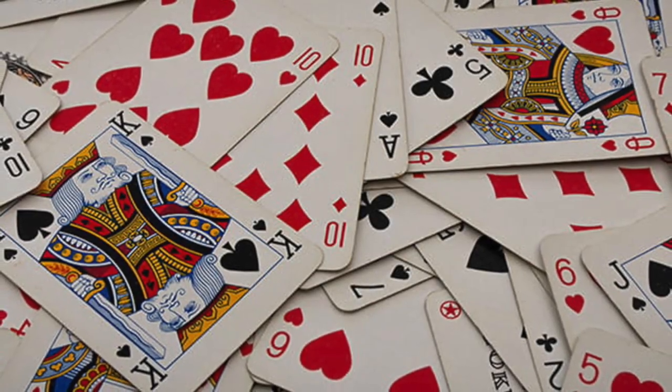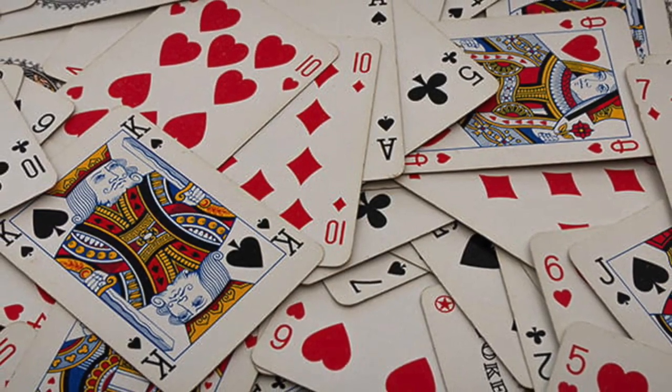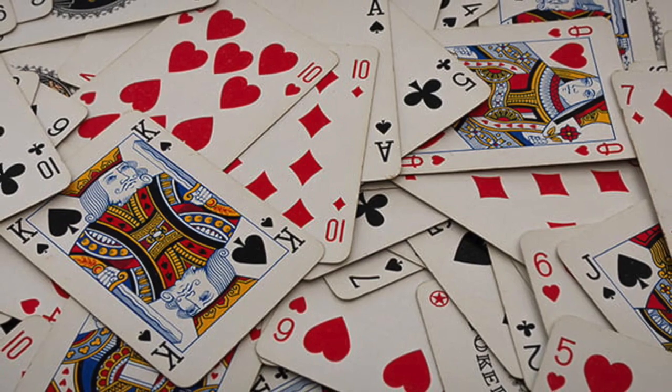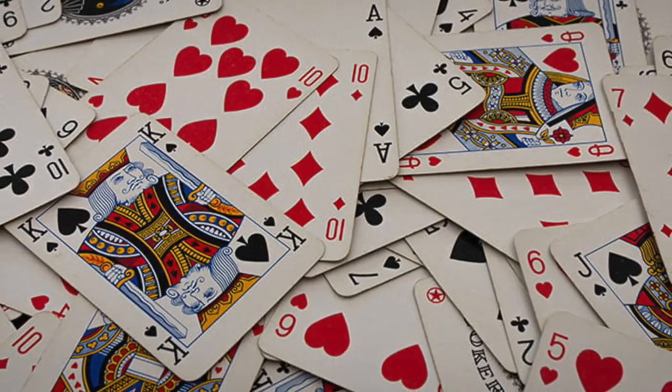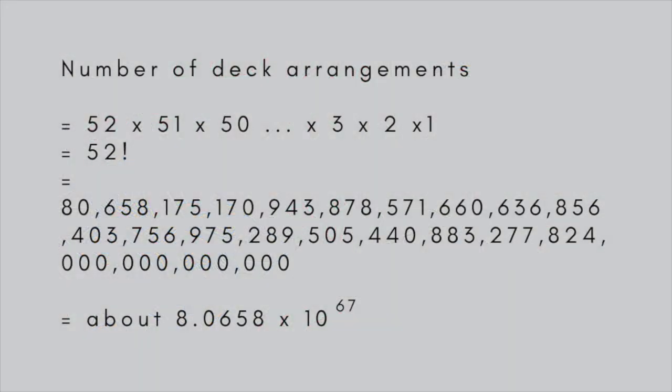Take an ordinary pack of playing cards. How many different ways can the deck be arranged? The first card can be any of 52, the second any of the remaining 51, and so on. So that the total number of possible arrangements is 52 times 51 times 50, all the way to 3 times 2 times 1, or 52 factorial, which comes out to be about 8.0658 times 10 to the 67.